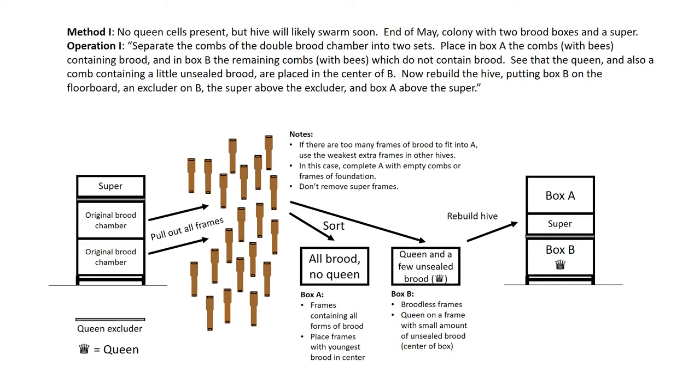Into Box A place frames containing all forms of brood, with the youngest brood in the center of the box and older brood to the outside. It is important that some eggs or very young larvae are included in Box A, since this box will be raising its own queens. If the number of frames with brood exceeds the capacity of Box A, do not put those frames in B. Instead add them to other weak hives.